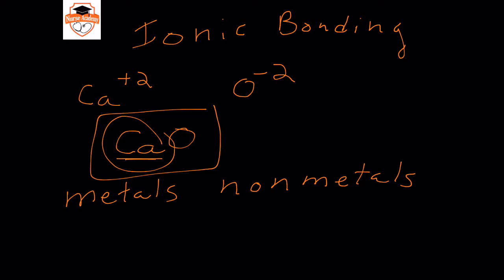We can form compounds with transition metals, but that's probably beyond the scope of what you'll be asked on the nursing exam. Stick with the alkaline metals and alkaline earth metals, which are group one and group two on the periodic table — those are the ones you'll most likely be asked about. In any ionic compound, you look at the periodic table, and as we reviewed earlier, you can predict what charges those metals are going to make.